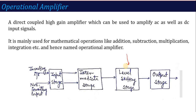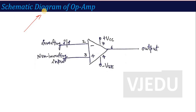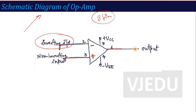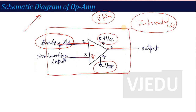Now, the second important thing in this unit is the symbol of the Operational Amplifier — the schematic diagram. Op-Amp is an 8-pin IC. In the symbol, there is a negative input — that is the inverting input — and a positive terminal — that is the non-inverting input. One terminal is the output. To operate any IC, you require a supply and a ground pin. This is the symbol we will use throughout this complete unit, so remember it very well.